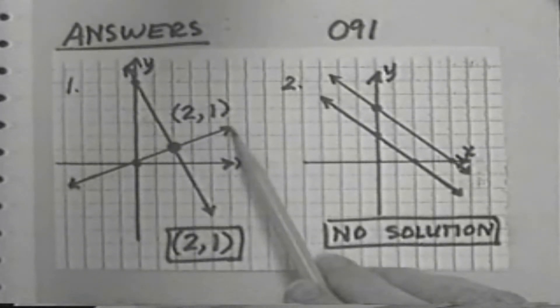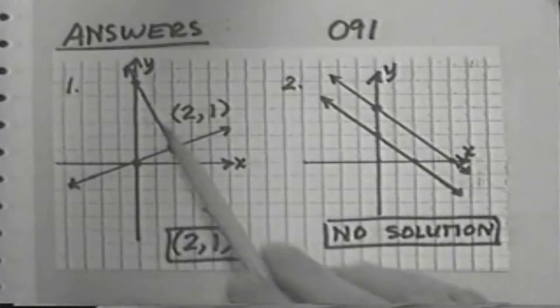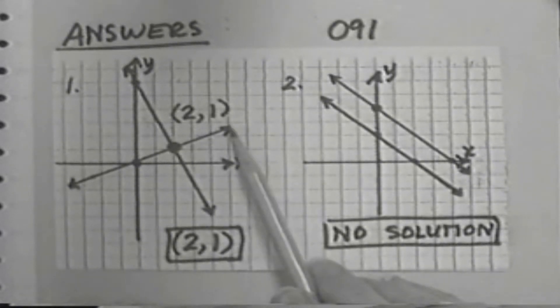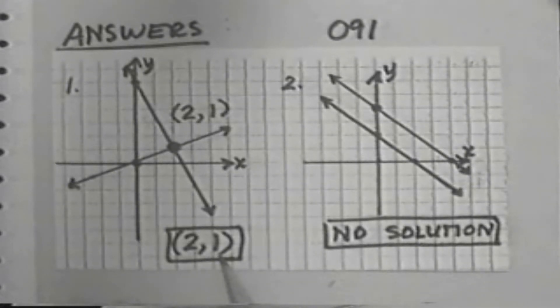Here are the answers to your two exercises. For the first graph, we have a graph that goes uphill from left to right. A graph that goes downhill from left to right. They intersect at the point 2, 1. So the solution is 2, 1.